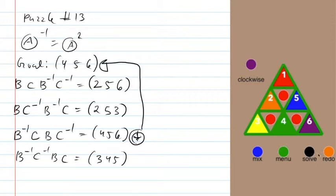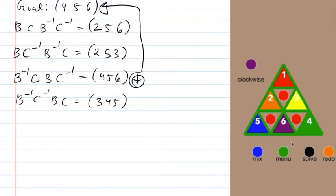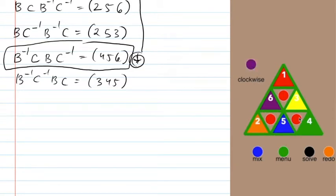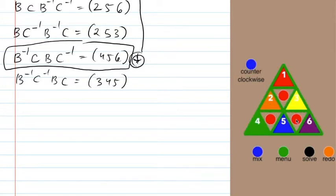Given the original challenge of cycling positions 4, 5, 6, we now know that doing B-inverse, C, B, C-inverse will solve the puzzle. This may feel like just randomly trying things, but that is something you can legitimately do in puzzles. Coming up, we'll see how to more deliberately construct a commutator to achieve a specific goal, rather than randomly generating one — though random exploration has discovered many great patterns.